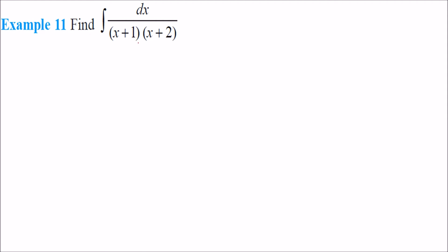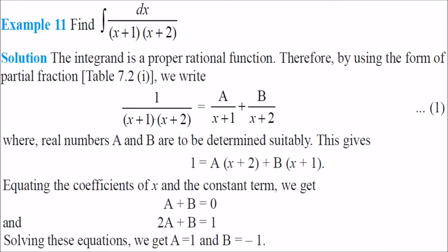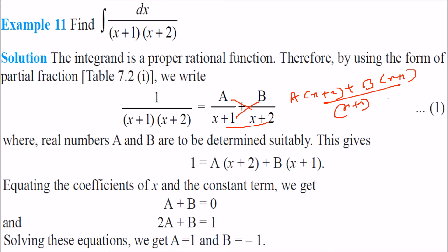Let us solve ∫dx/[(x+1)(x+2)]. We write 1/[(x+1)(x+2)] = A/(x+1) + B/(x+2). Combining over the common denominator gives A(x+2) + B(x+1) divided by (x+1)(x+2).